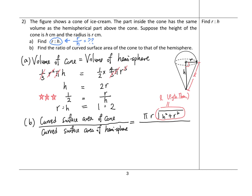The denominator is the curved surface area of the hemisphere, which is 4πr² divided by 2. Since h = 2r, substituting gives l = √((2r)² + r²) = √(4r² + r²) = √(5r²) = r√5.